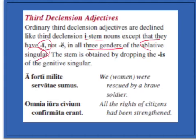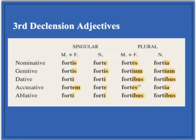Now that we're dealing with third declension adjectives, it makes noun-adjective agreement a little bit trickier. Third declension adjectives come in three varieties, and the variety depends on how many different nominative singulars there are. Here's an example of the most typical third declension adjective — the one with two nominative singulars.